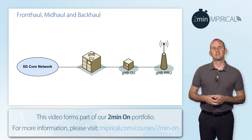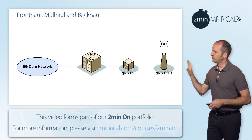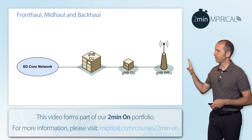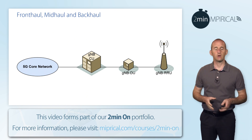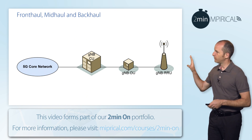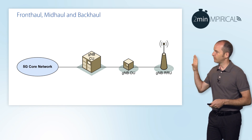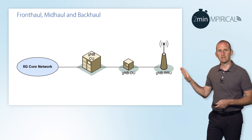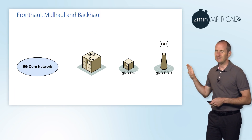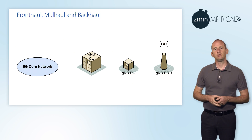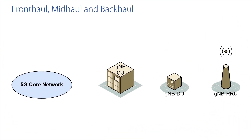Within a centralized deployment, you can see three separate components of the radio access network. We've got the gNB because it's a 5G RAN node — so we've got a gNB centralized unit, a gNB distributed unit, and a gNB remote radio unit. These elements will be positioned at different geographical parts of the network.